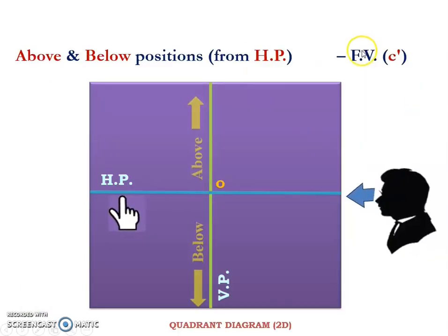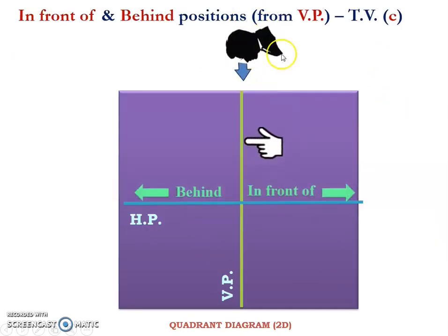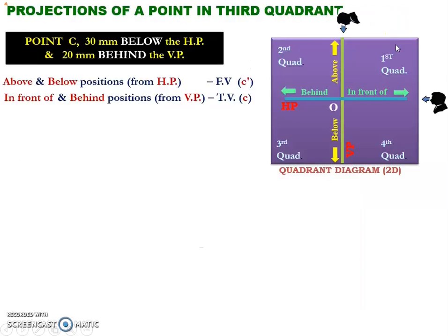Now we shall move on to the shortcut method. From this diagram, we can understand that the front view reveals the above and below distances from the horizontal plane, and it must be denoted using the corresponding small letter with dash. In the same way, the top view reveals the in-front-of and behind positions from the vertical plane, and the top view must be denoted using the corresponding lowercase letter.